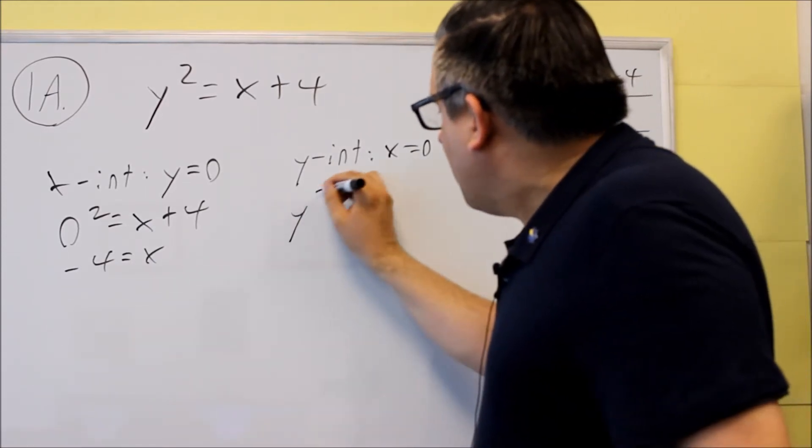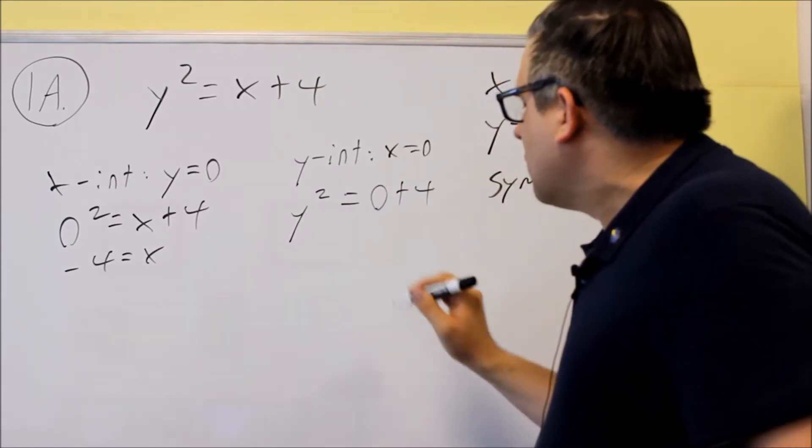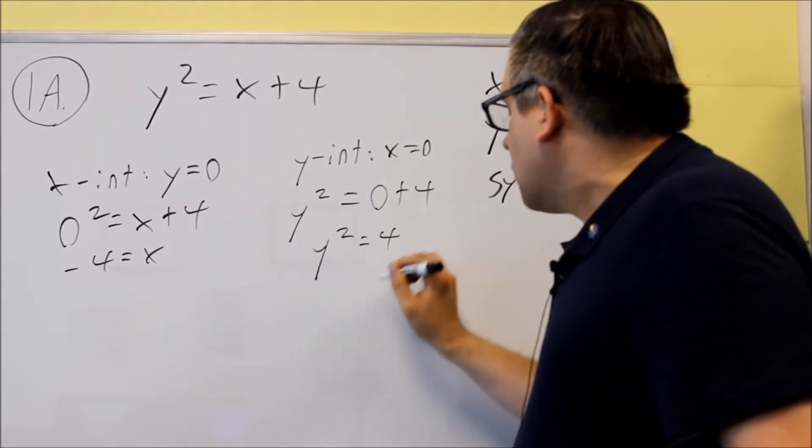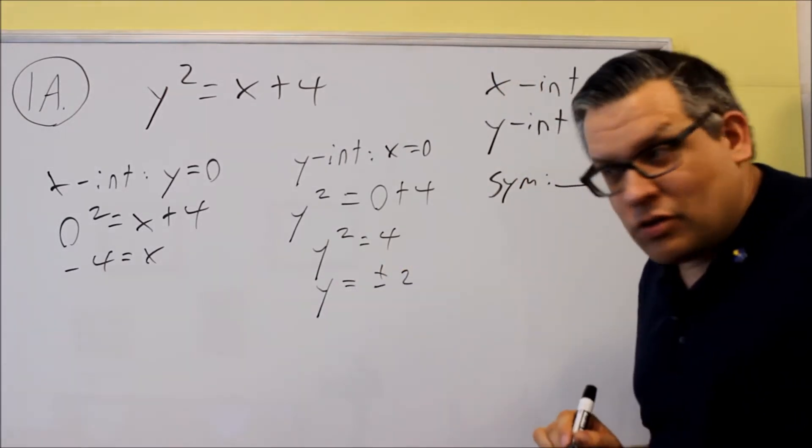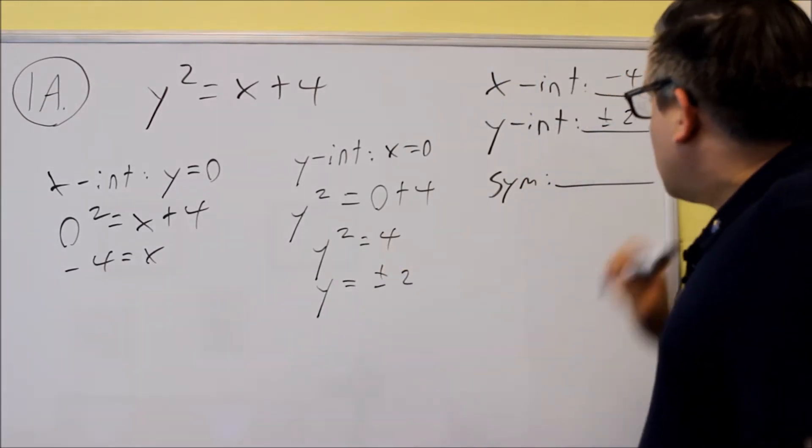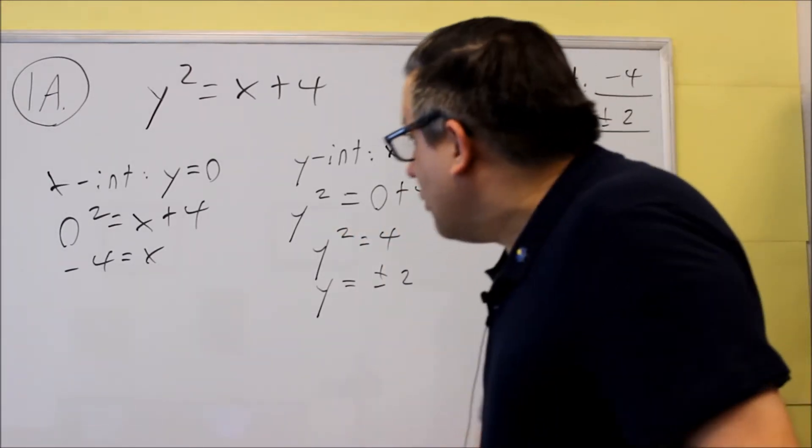And then we'll solve. So for this, we'll put a 0 in for the x and we get y squared equals 0 plus 4. We get y squared equals 4, and you get y is equal to plus or minus 2. So we get two answers there for the y-intercept. So that's the first part of the question.